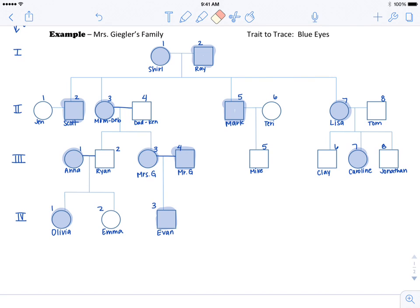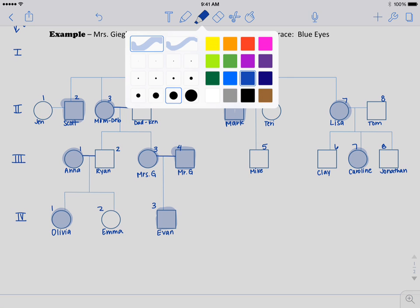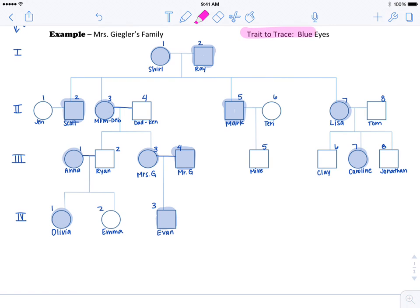This is how a normal pedigree is going to appear to you. You're going to see some of the members are shaded and some are not. The shading means that they possess the trait that we are tracing. In this situation we are going to look at who has blue eyes in my family. So every member who is shaded right now has blue eyes.